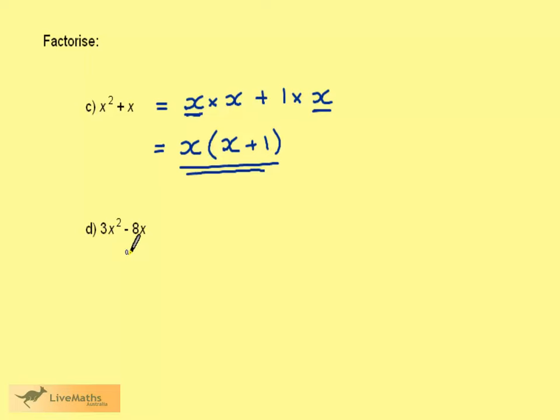Finally, we have 3x squared minus 8x. 3x squared is 3 times x times x. We have the minus sign, and then there is no way of writing 8 with 3 as a factor. So we are going to write 8x quite simply as 8 times x.